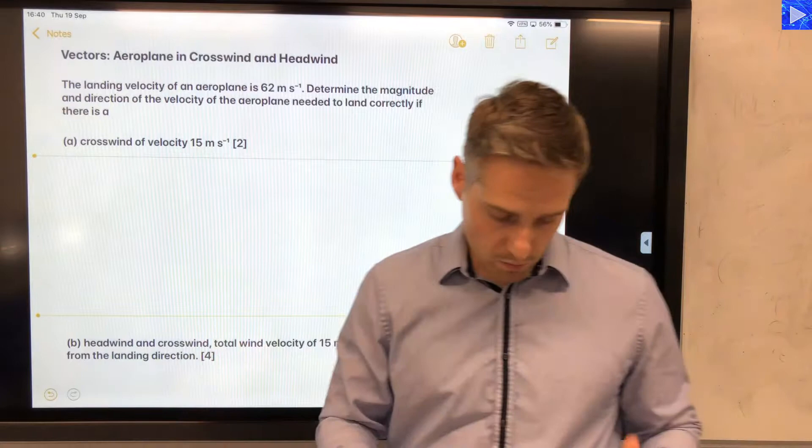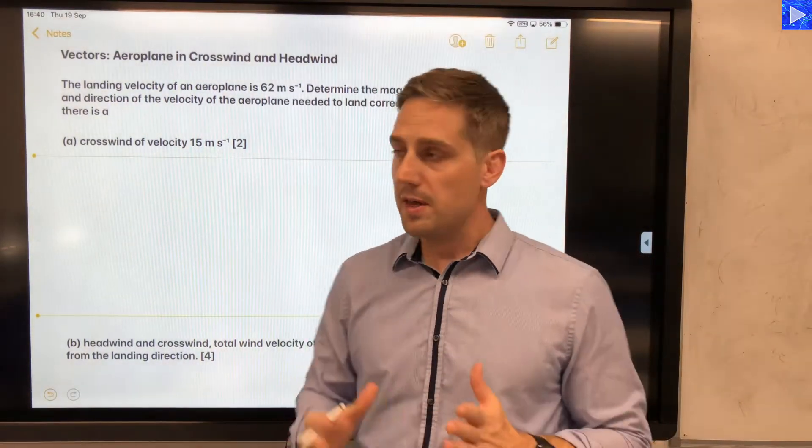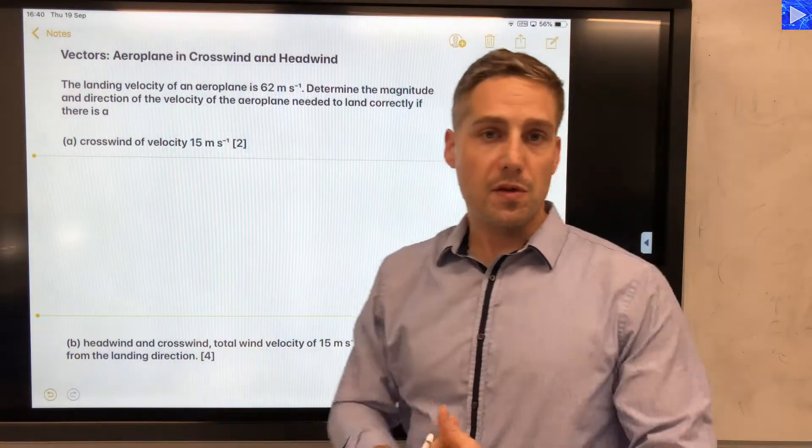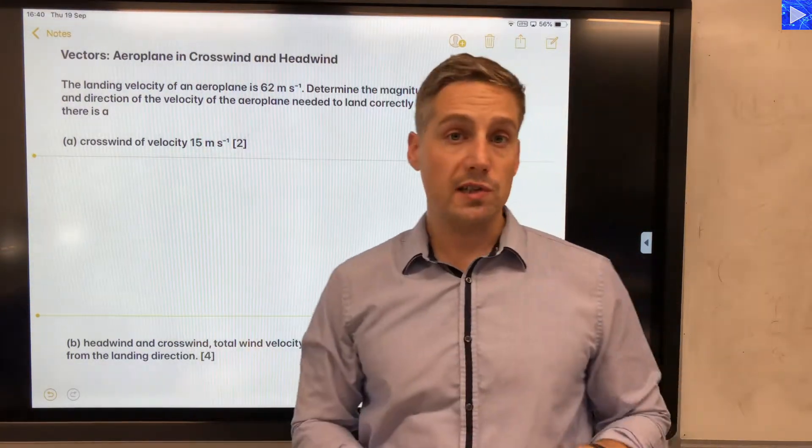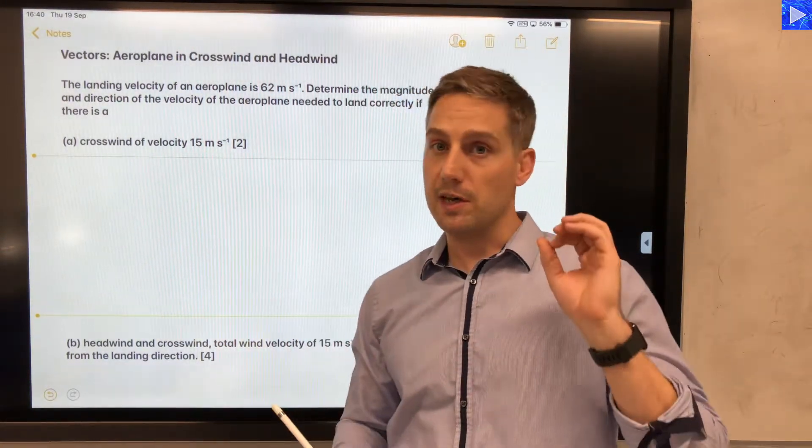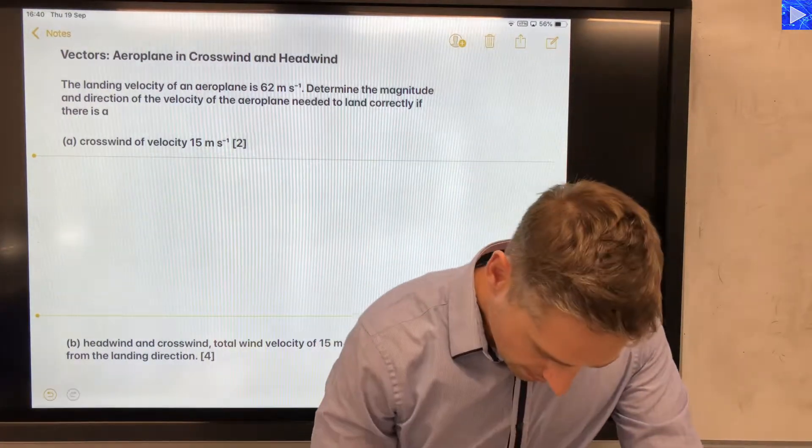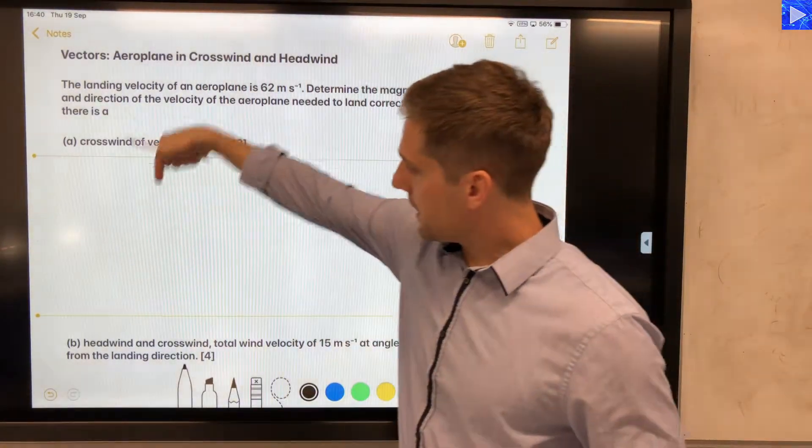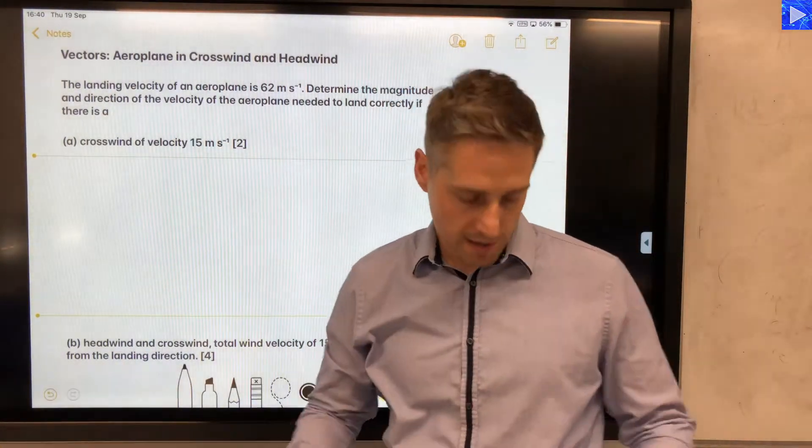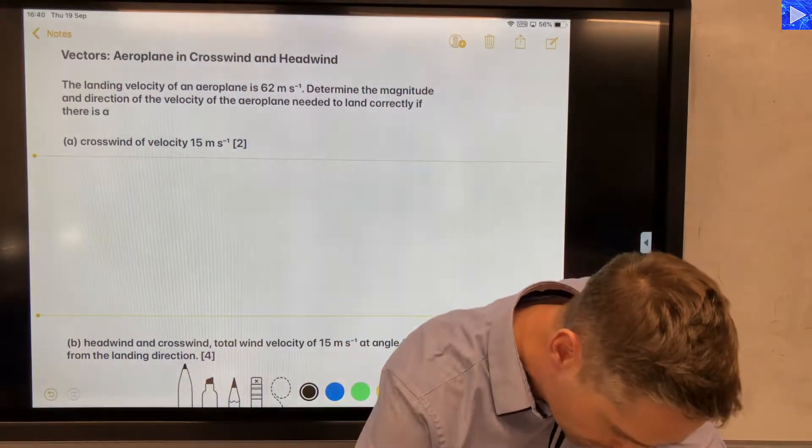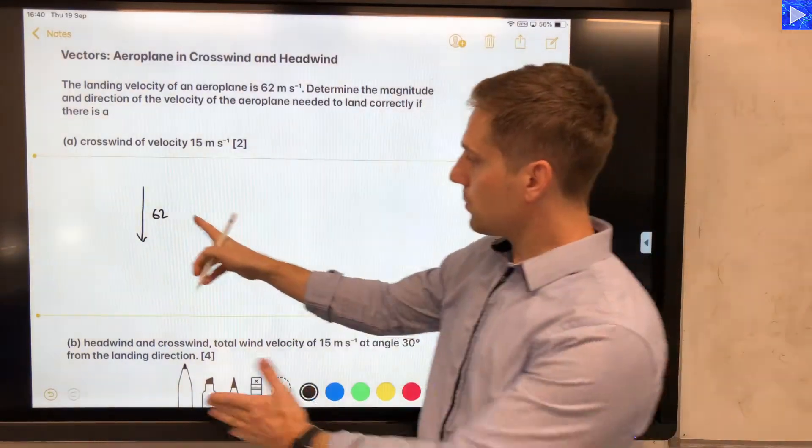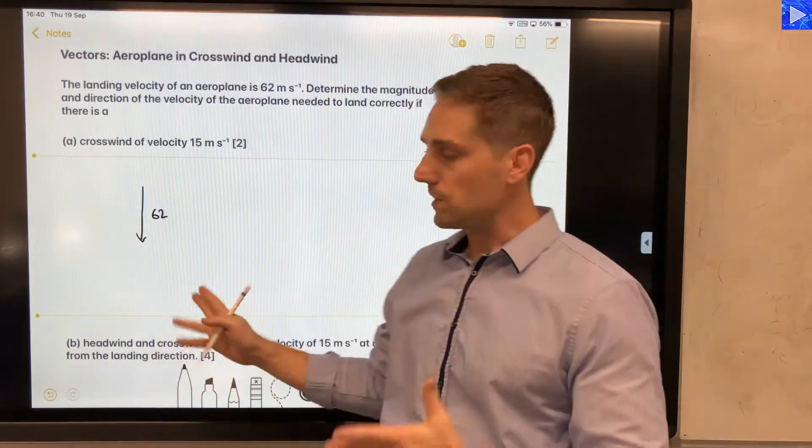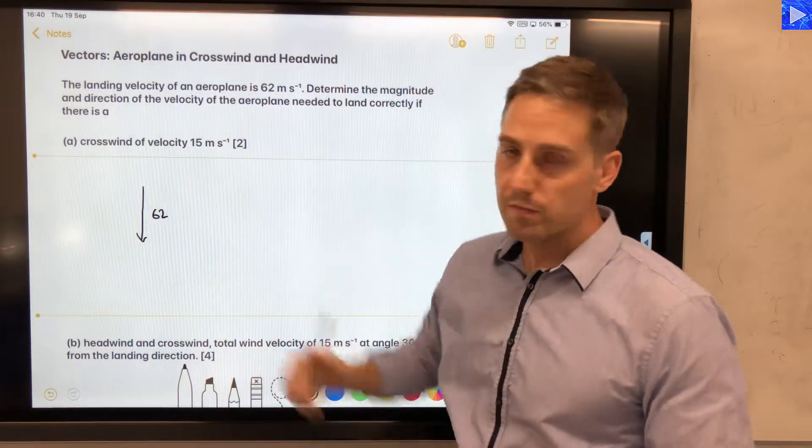So what we want to start off with is actually the final result that we want to achieve, which is the velocity vector of 62 meters per second along the runway. So let's assume our runway is vertical in my diagram, so that means our resultant velocity vector needs to add up to 62 meters per second vertically downwards.